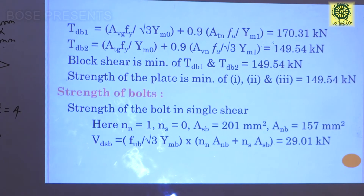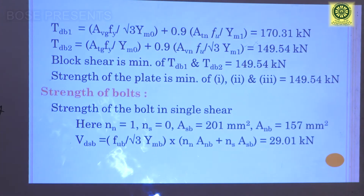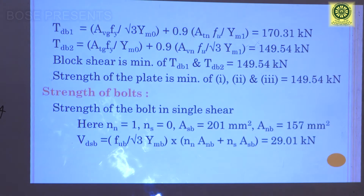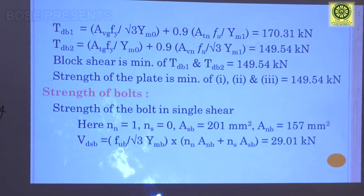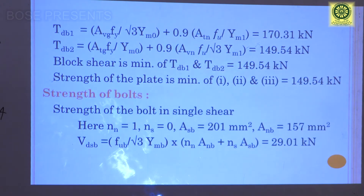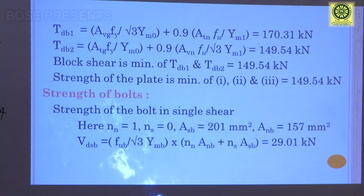Now calculate TDB1 and TDB2; the minimum of the two is the block shear strength. The formula for TDB1 (from clause 6.4) is: TDB1 = AVG × FY / (√3 × γM0) + 0.9 × ATN × FU / γM1 = 170.31 kN. The formula for TDB2 is: TDB2 = ATG × FY / γM0 + 0.9 × AVN × FU / (√3 × γM1) = 149.54 kN.